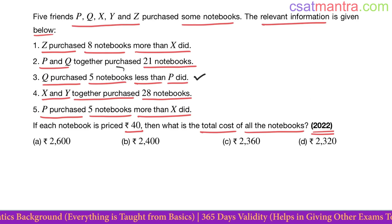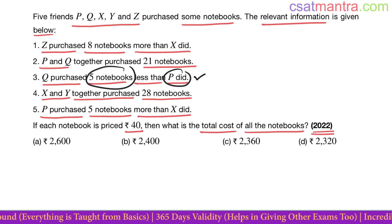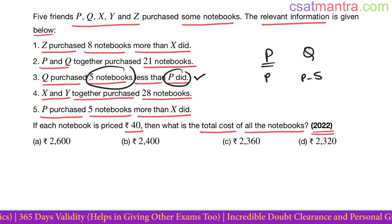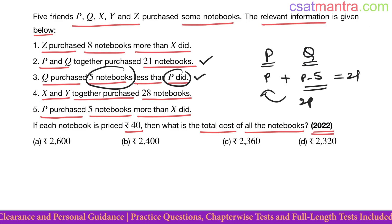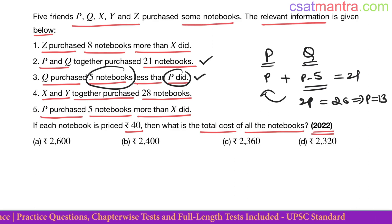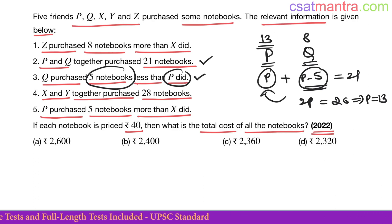Pay attention to the third equation. Q purchased 5 notebooks less than P did. If P purchased p notebooks, Q would be p minus 5. If you see the second statement, P and Q together purchase 21 notebooks, so this sum is 21. 2p is 21 plus 5, which is 26. P is 13. If P is 13, p minus 5 is 8. So P purchased 13 books, Q purchased 8 books.